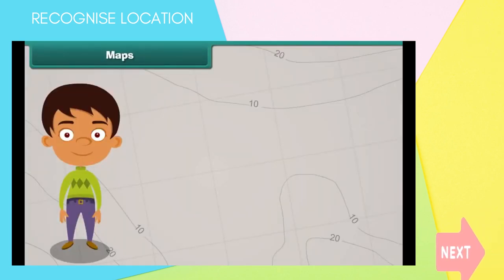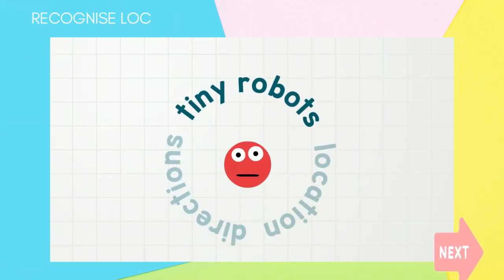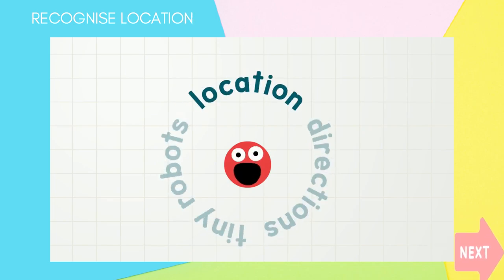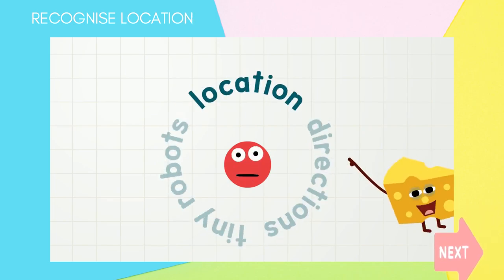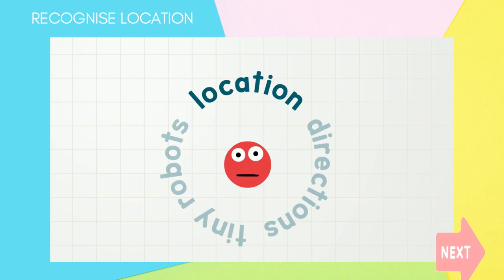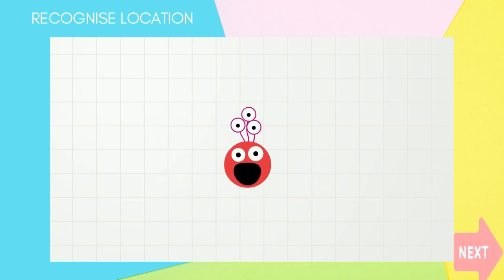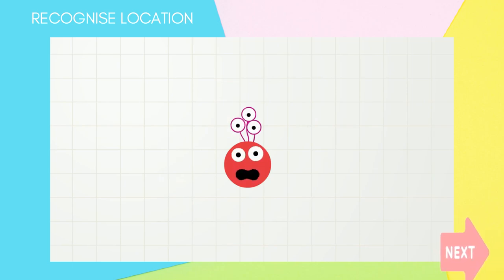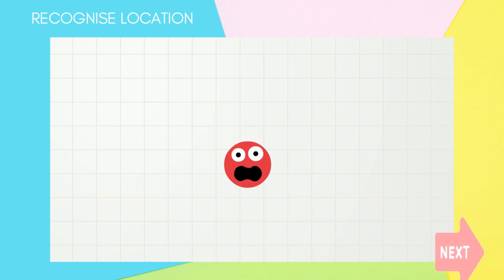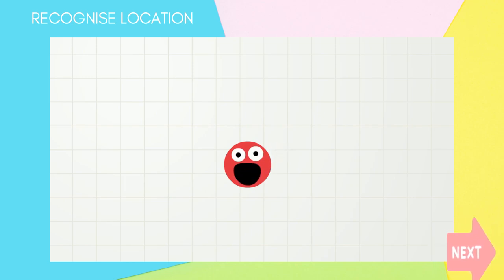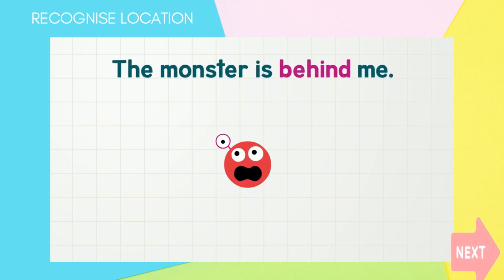Location is where something is. For example, somebody told me there is a monster in this video, but I can't find it — I might need help locating it. Where is the monster? The monster is behind me!